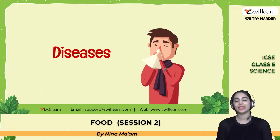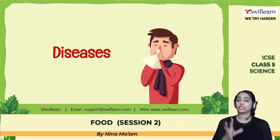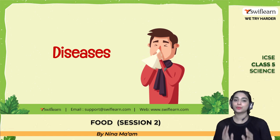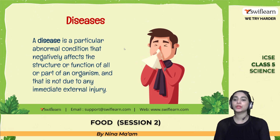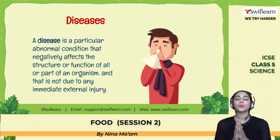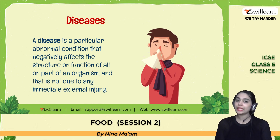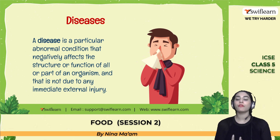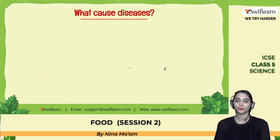What is meant by a disease? A disease is a disorder happening within a body or organism that negatively affects the smooth functioning of that body. More specifically, a disease is a particular abnormal condition that negatively affects the structure or function of all or a certain part of an organism, and which is not caused by an external injury.